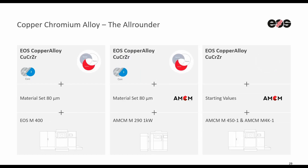If we look at the all-rounder — the copper chrome zirconia alloy, also discussed with the launcher example — here we have further options. We have a solution on the M400, the single field system, as well as on the same AMCM M291 one kilowatt system. We have not yet officially released a process and a material for the larger frame systems, the AMCM 450 and M4K systems. But as you saw with the example, this can still be successfully used as a solution.